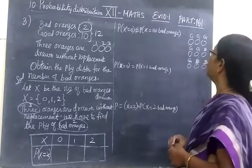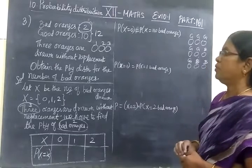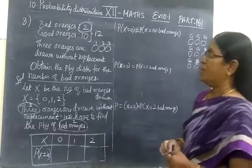So here we are given part 161, third question. Number of bad oranges is 2.